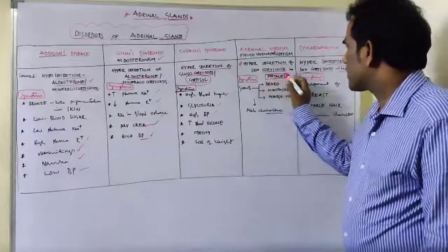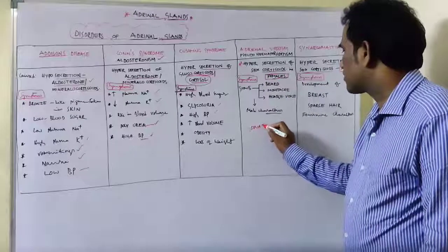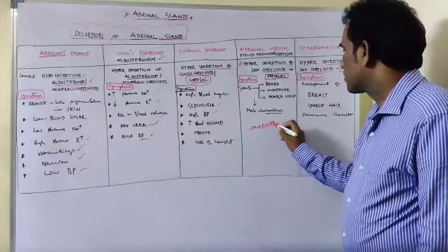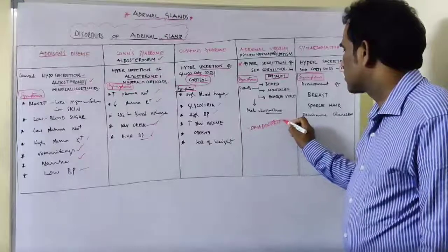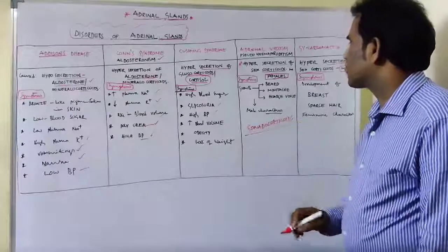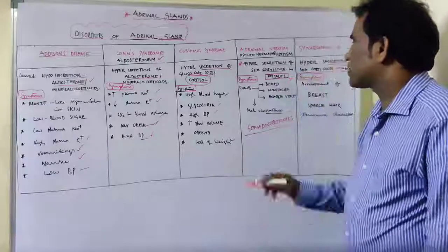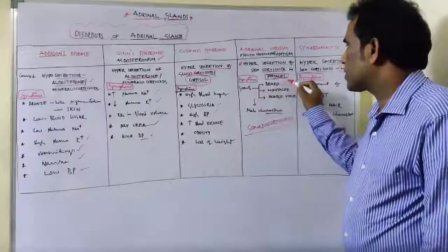What are the causes? The main root cause for adrenal virilism is hypersecretion of sex corticoids, or we can call it gonadocorticoids. Hypersecretion of sex corticoids or gonadocorticoids.